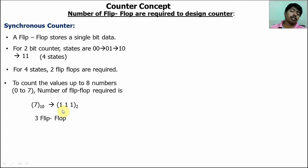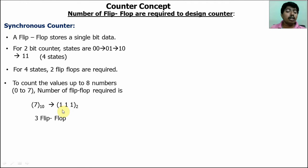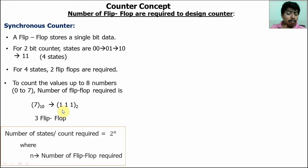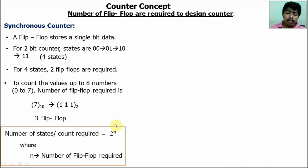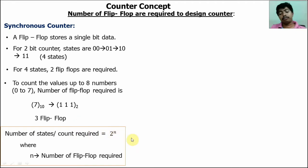If a question asks to count up to 100 or 1000 or higher values, just take the maximum number in the states and find the equivalent binary value, then count the digits — that gives the number of flip-flops required. The formula is: number of states = 2^n. So if n=1, states=2; if n=2, states=4; if n=3, states=8; if n=4, states=16.